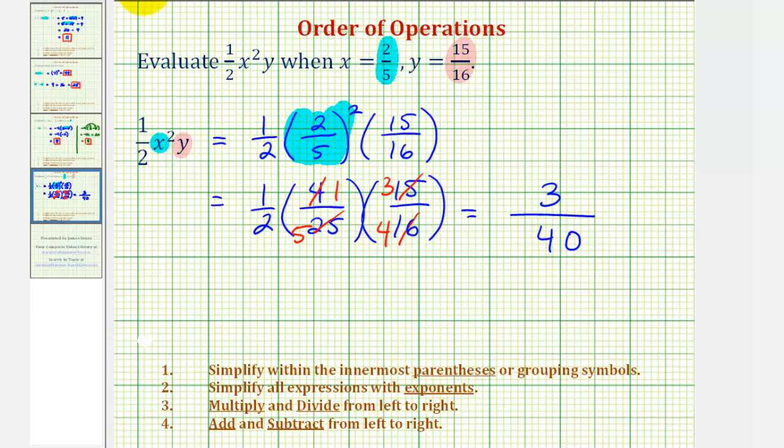So the variable expression is equal to three-fortieths when x equals two-fifths and y equals fifteen-sixteenths. I hope you found this helpful.